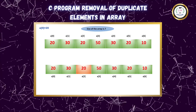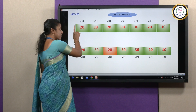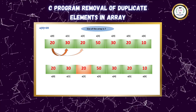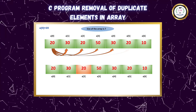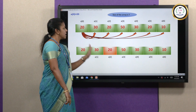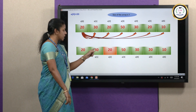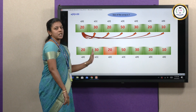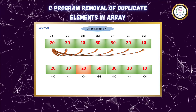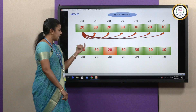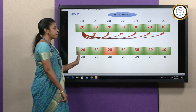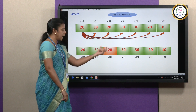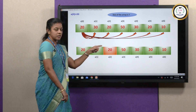To its right are: 30, 20, 50, 30, 20, 10. So 20 is compared with all other elements. First, 20 is compared with 30 — no change because both are not equal, so we move to the next memory location. At index position 2, we have 20. The element 20 is compared with 20 — both elements are equal, which means we have to delete this element.